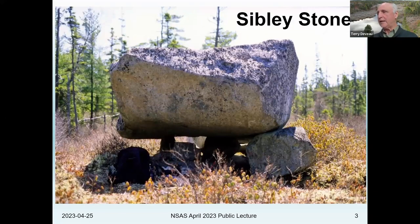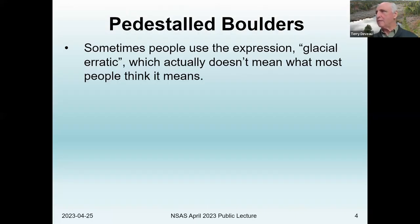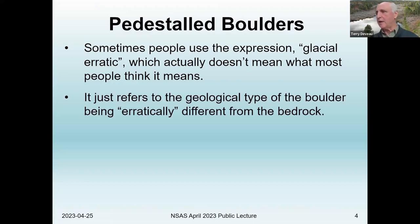Here's one of the more classic pedestal boulders in Nova Scotia — it's called the Sibley Stone. You can see the little stones underneath holding up this fairly massive boulder. Sometimes people use the expression 'glacial erratic,' which really doesn't mean what people think it means. A glacial erratic is just any stone or boulder that has a different type of geology from the bedrock of the area.